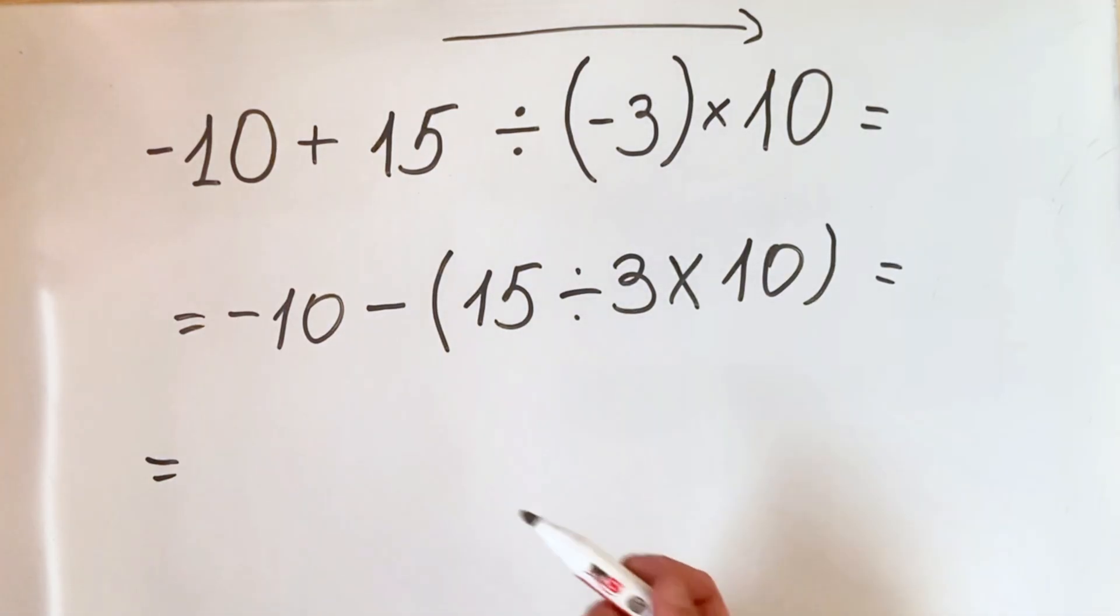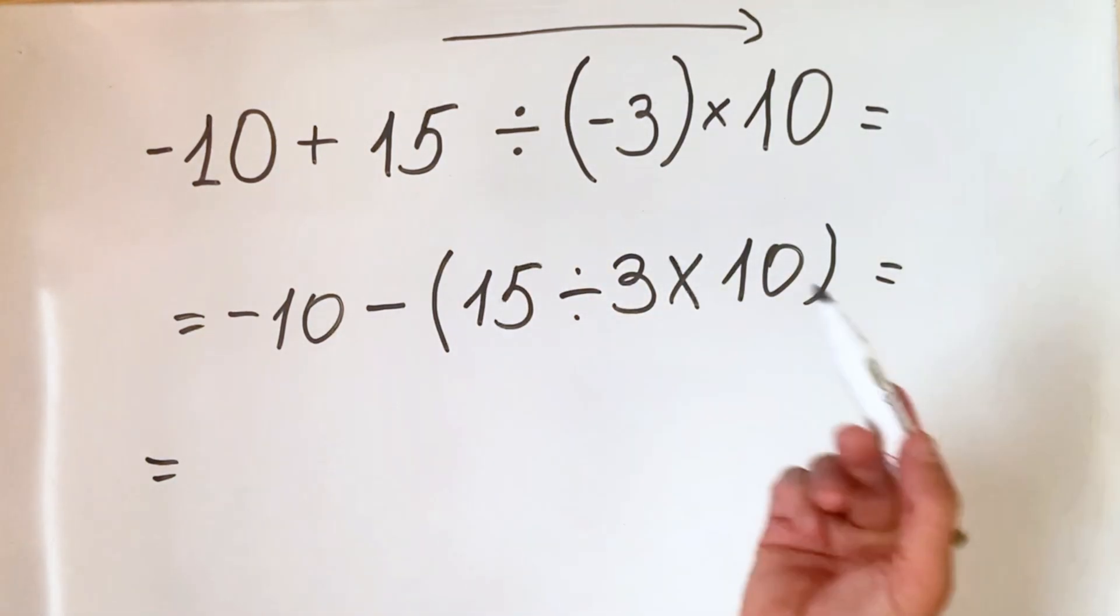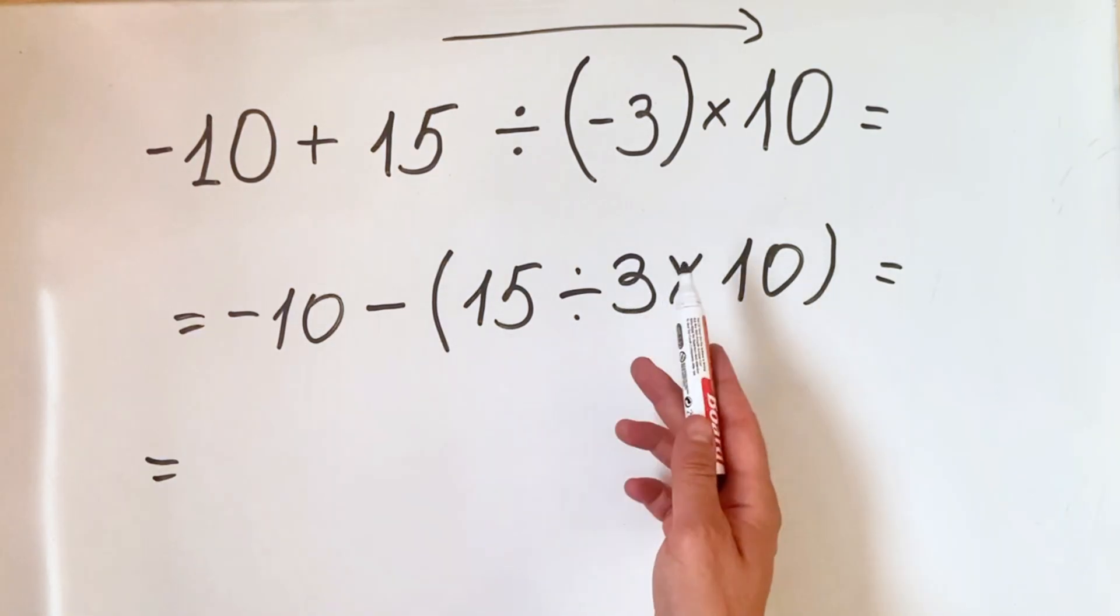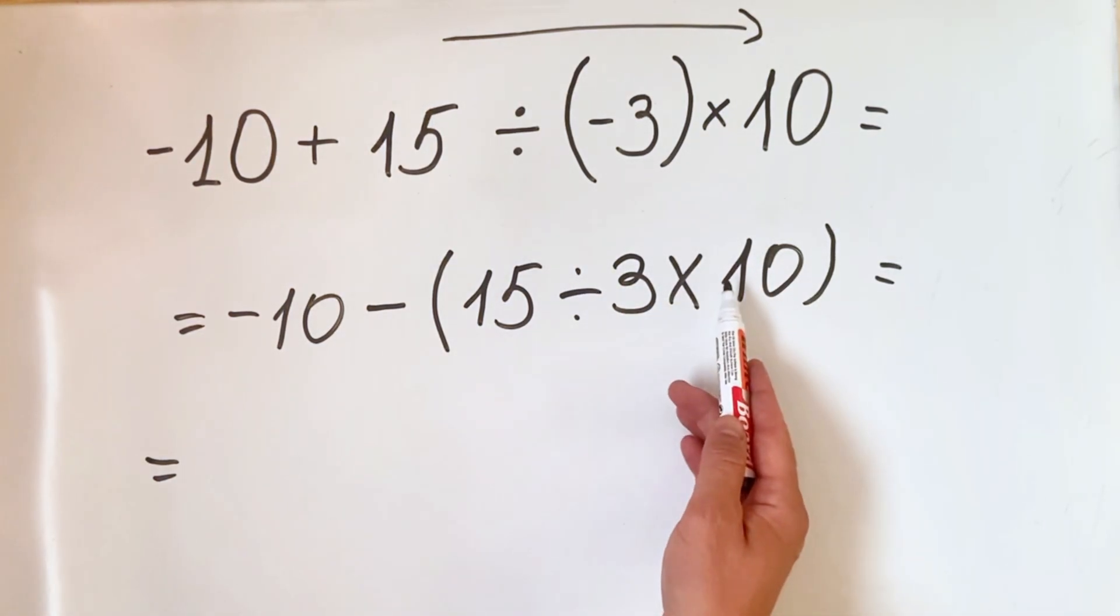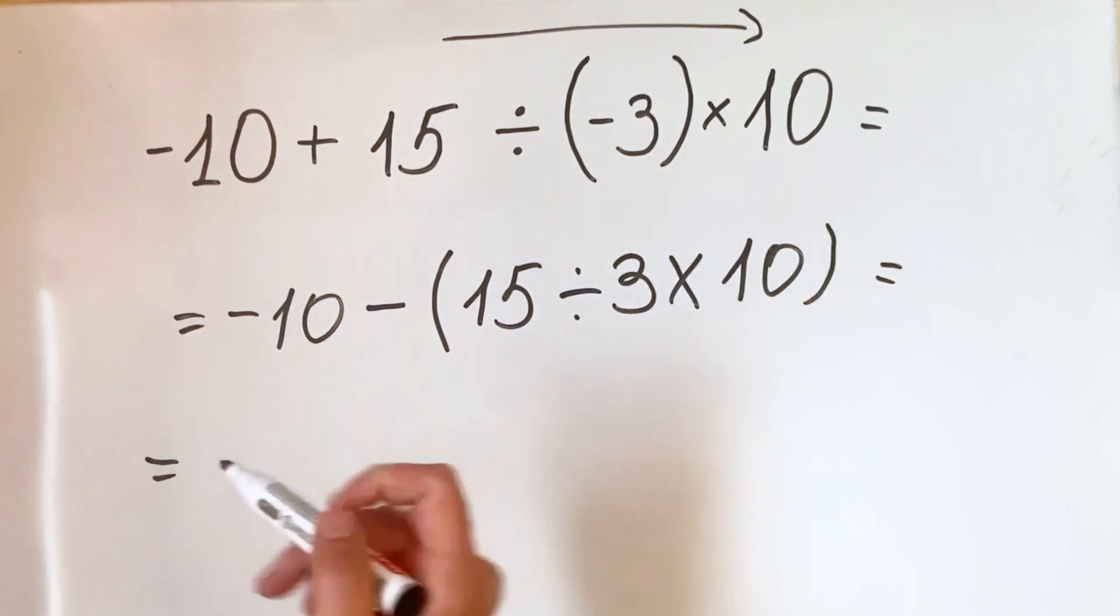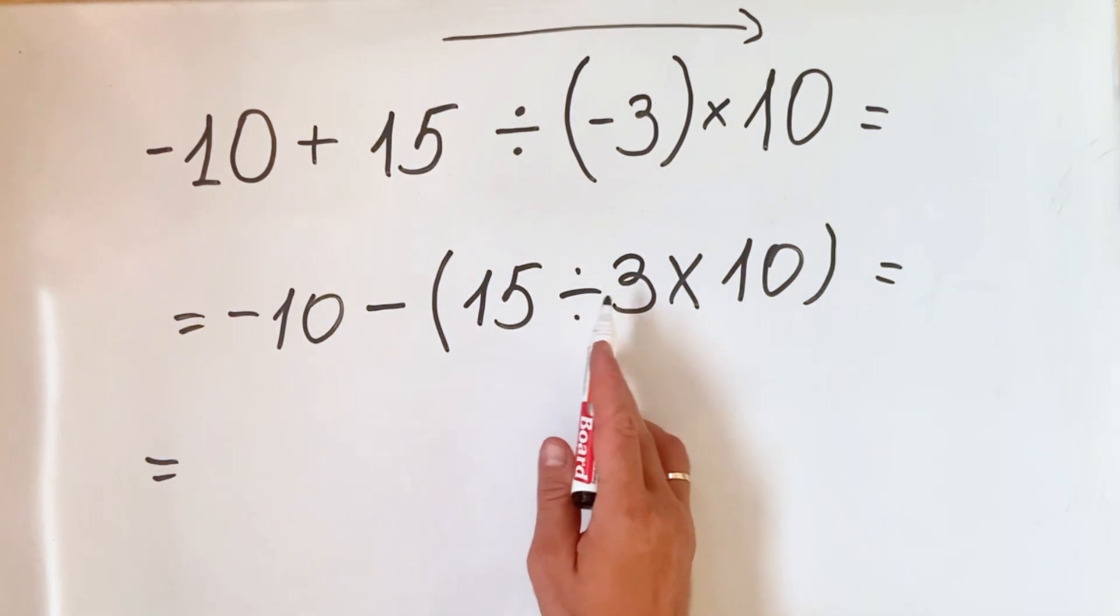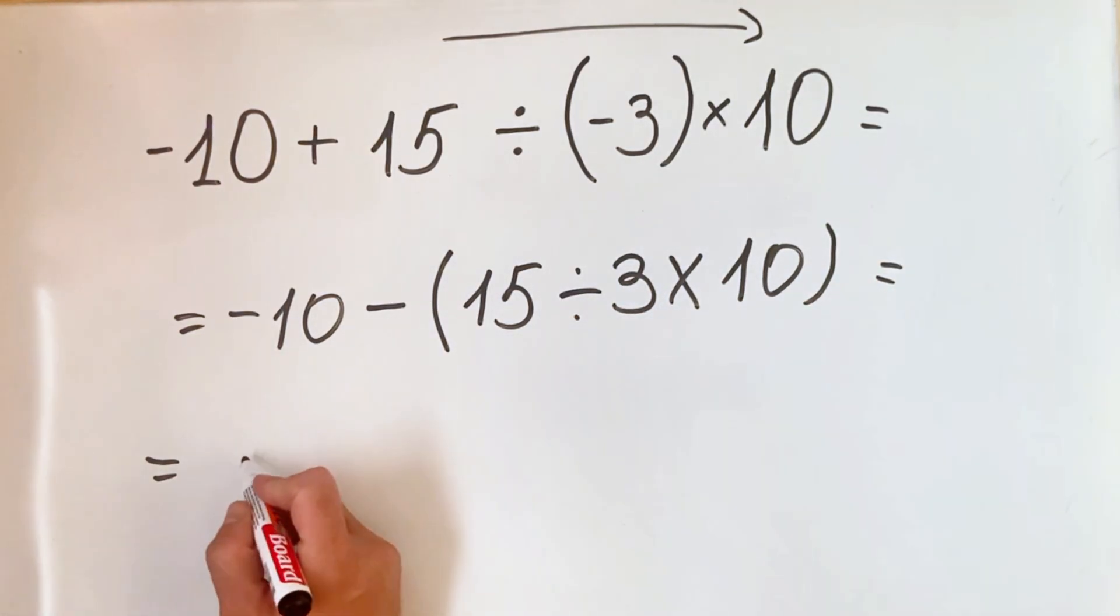So now what we do, we must do what we have inside the parenthesis, because we know in PEMDAS first we need to do what's inside the parenthesis. And if we have division and multiplication, we need to do it from left to right. So we have 15 divided by 3, which equals 5, multiply by 10. But let's write step by step.